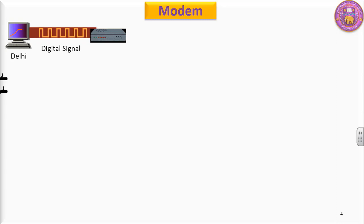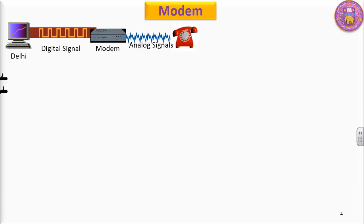This is a modem, a device connected to the computer. The computer generates a digital signal and this digital signal reaches the modem. The modem converts these digital signals into analog signals, which are in the form of waves. A telephone is connected to the modem, so the signal goes from computer to modem and from modem to telephone.